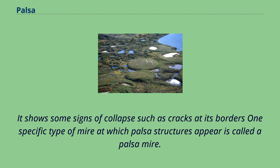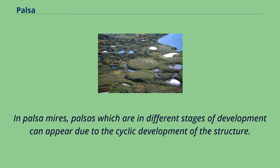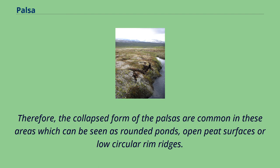The Storeflake peat bog near Abisko in northern Sweden is a permafrost plateau. It shows some signs of collapse such as cracks at its borders. One specific type of mire at which palsa structures appear is called a palsa mire, sometimes described as palsa bogs; however, they both refer to a peaty wetland where palsa mounds occur. In palsa mires, palsas which are in different stages of development can appear due to the cyclic development of the structure. Therefore, the collapsed form of the palsas are common in these areas, which can be seen as rounded ponds, open peat surfaces, or low circular rim ridges.